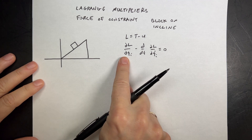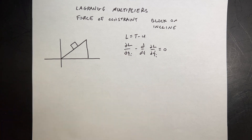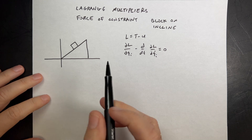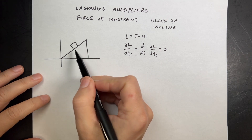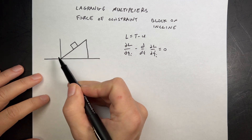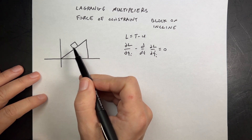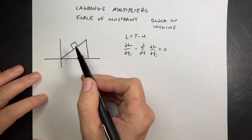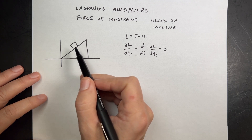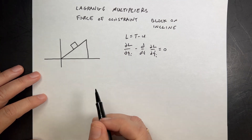Why do we use Lagrangian mechanics? We use it when an object is constrained in some way. This block can only move on this plane, so I can make a simpler set of equations to solve. But if I want to find the force of constraint, that's when we use Lagrange multipliers.